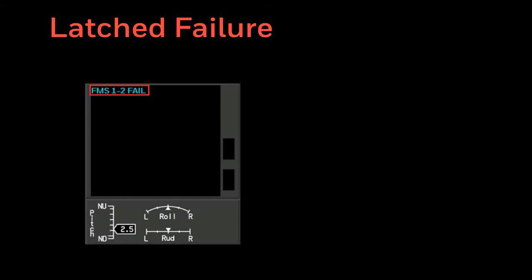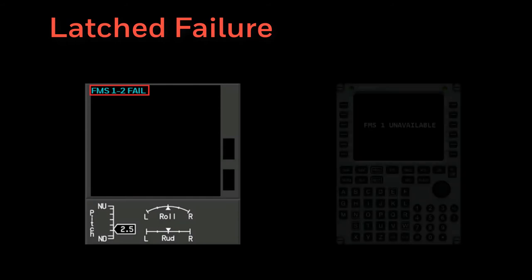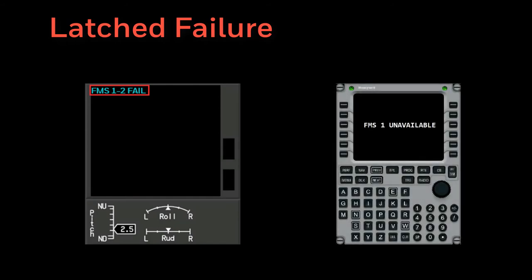A latch failure is observed as a permanent FMS 1 or FMS 2 fail CAST message and the affected FMS shows unavailable on the MCDU display until power is cycled. A latch occurs if another reset occurs within one minute of the last cold start reset. The FMS is unusable during this time.